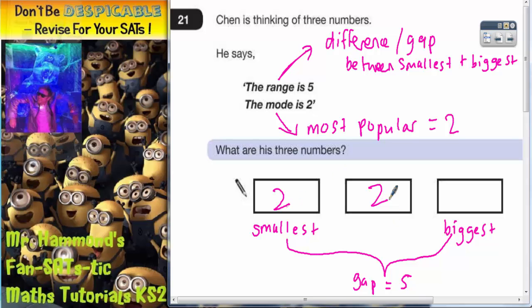So if we leave it at that and have these as twos, then whatever we put in the end, two will be the mode because it will be the most popular. But we do need a gap of five.